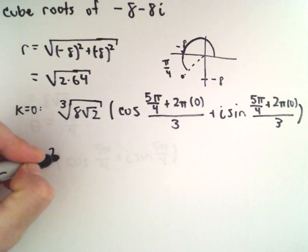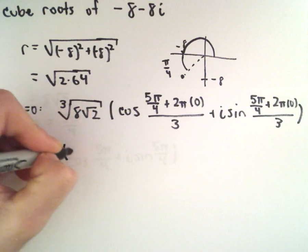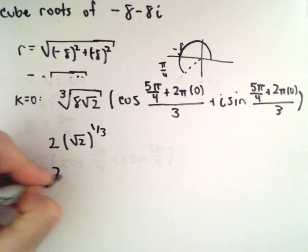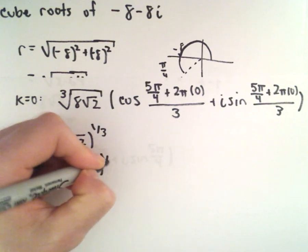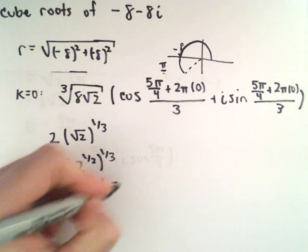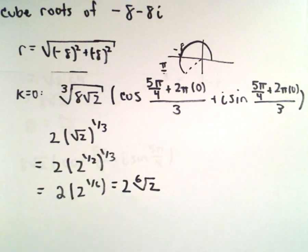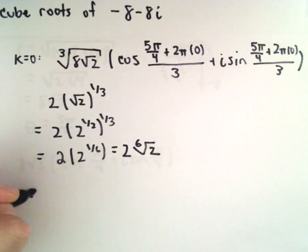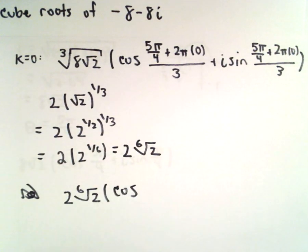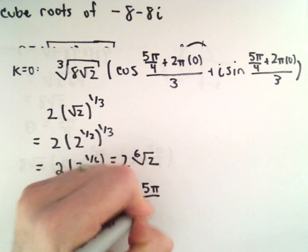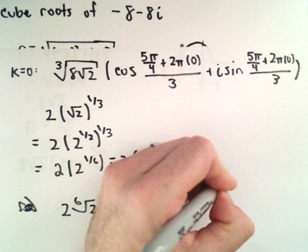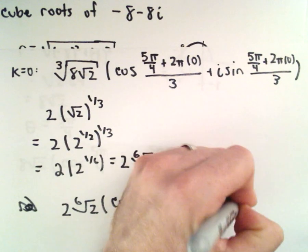We can take the cube root of 8, which is just 2. Then we're left with taking the cube root of the square root of 2. We can write that as 2 to the 1/2 raised to the 1/3 power, giving us 2 to the 1/6 power, which is the 6th root of 2. So out front we'll have 2 times the 6th root of 2, multiplied by cosine of 5 pi over 12 plus i times sine of 5 pi over 12. That's one solution.